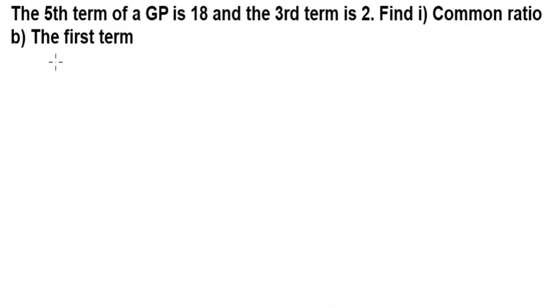Let's solve this problem we have here. In this question, the fifth term of a GP is 18 and the third term is 2. Find the common ratio and the first term. So we have T5 equals 18 and T3 equals 2.